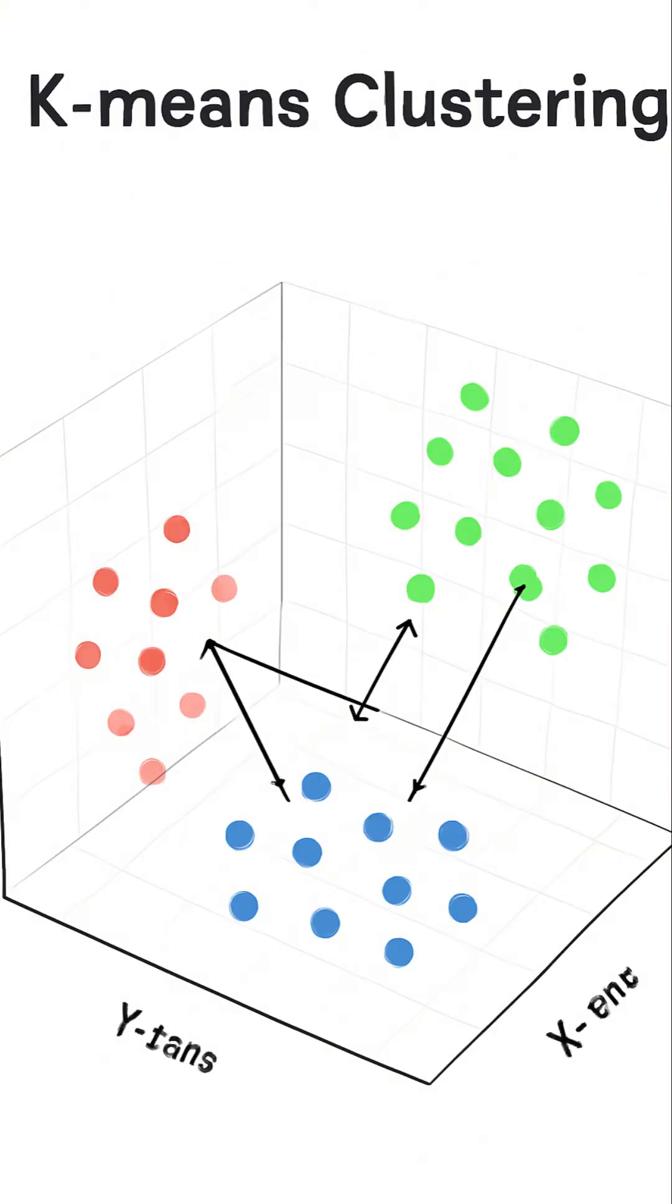To visualize it, k-means starts with a random selection of centroids, assigns points to the nearest centroid, recalculates centroids based on the mean of the assigned points, and repeats this process. The result is k clusters where the points within the cluster are as similar as possible.